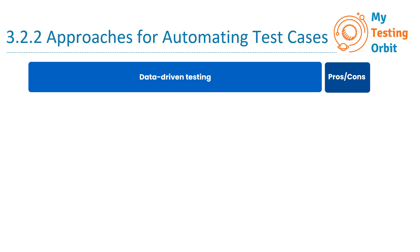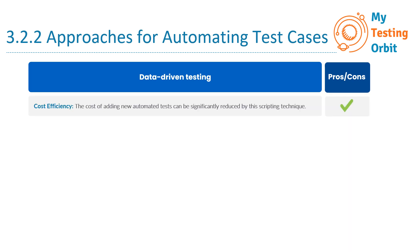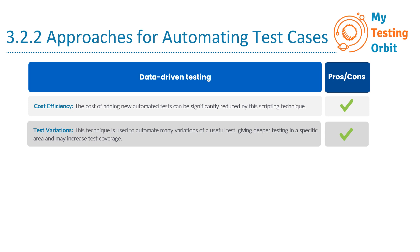Now let's go through the advantages and disadvantages of data-driven testing. The first advantage is cost efficiency — the cost of adding new automated tests can be significantly reduced by this scripting technique. In our login example, instead of creating separate scripts for each user login scenario, you can use the same script with different data, saving time and effort in script creation. The next advantage is test variations — this technique is used to automate many variations of a test, giving deeper testing in a specific area and potentially increasing test coverage. For instance, you can test different username and password combinations to ensure that various login scenarios work correctly.